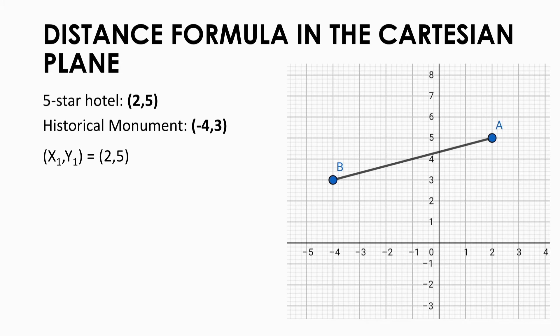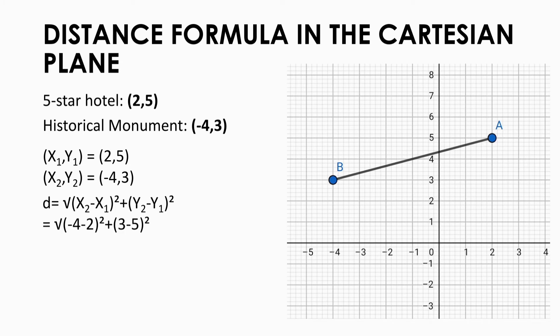In this case, 2 is x sub 1, 5 is y sub 1, negative 4 is x sub 2, and 3 is y sub 2. Then substitute the values into the formula. You'll get the square root of (negative 4 minus 2) squared plus (3 minus 5) squared. Subtract to get the square root of (negative 6) squared plus (negative 2) squared. Square the values to get the square root of 36 plus 4. Then for the last step, you'll get the square root of 40, which is 2 times the square root of 10.